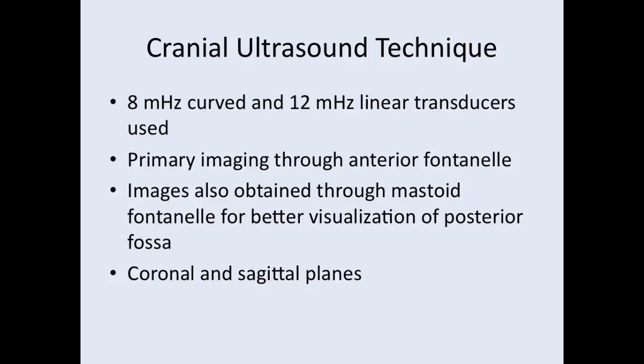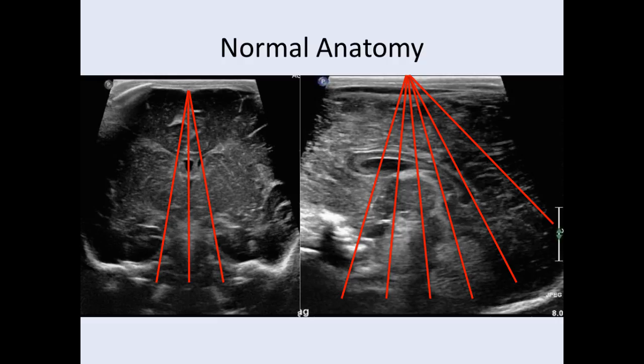We obtain images in both coronal and sagittal planes. Here is an example of the standard still images that you would obtain for a cranial ultrasound in both the sagittal and coronal planes. We also obtain cine images in both planes, which encompass these same positions, but some institutions only rely on still images, so these are the standard sets of still images that you need to obtain.